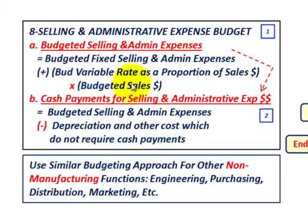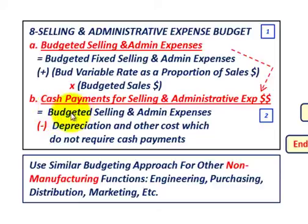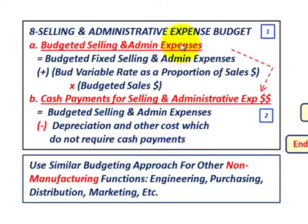We need to determine our budgeted variable rate for the selling and administrative expenses. Knowing our budgeted selling and administrative expenses, we can then determine the cash payments for those expenses. The cash payments equal the budgeted selling and administrative expenses, minus any depreciation and any other costs that do not require cash payments. So two things: determine budgeted selling expenses, and then deal with the cash payments.